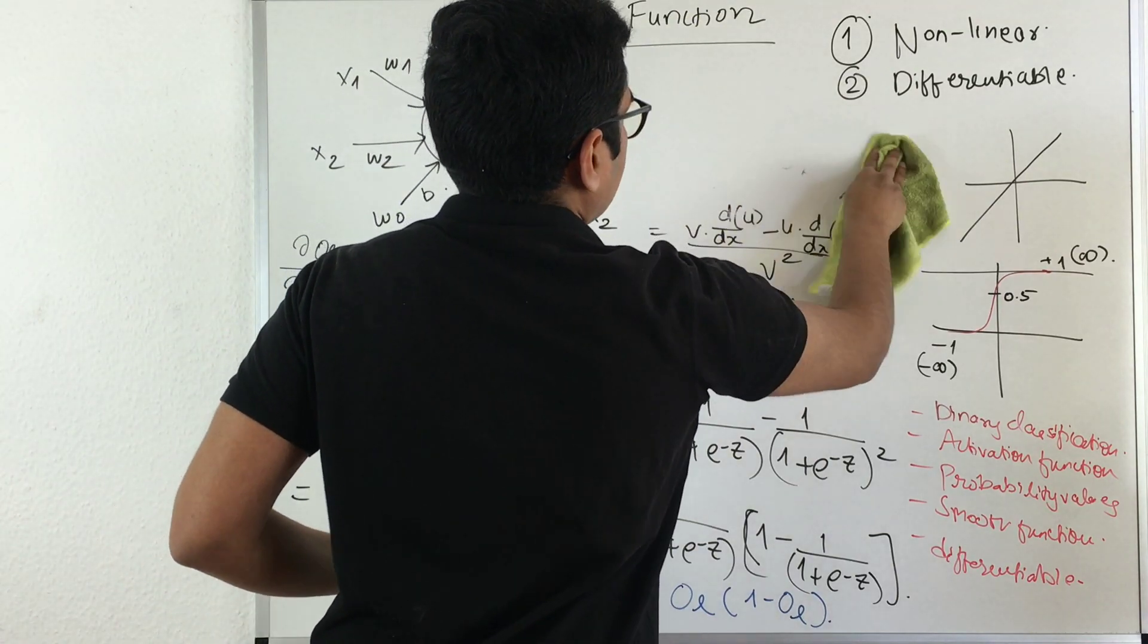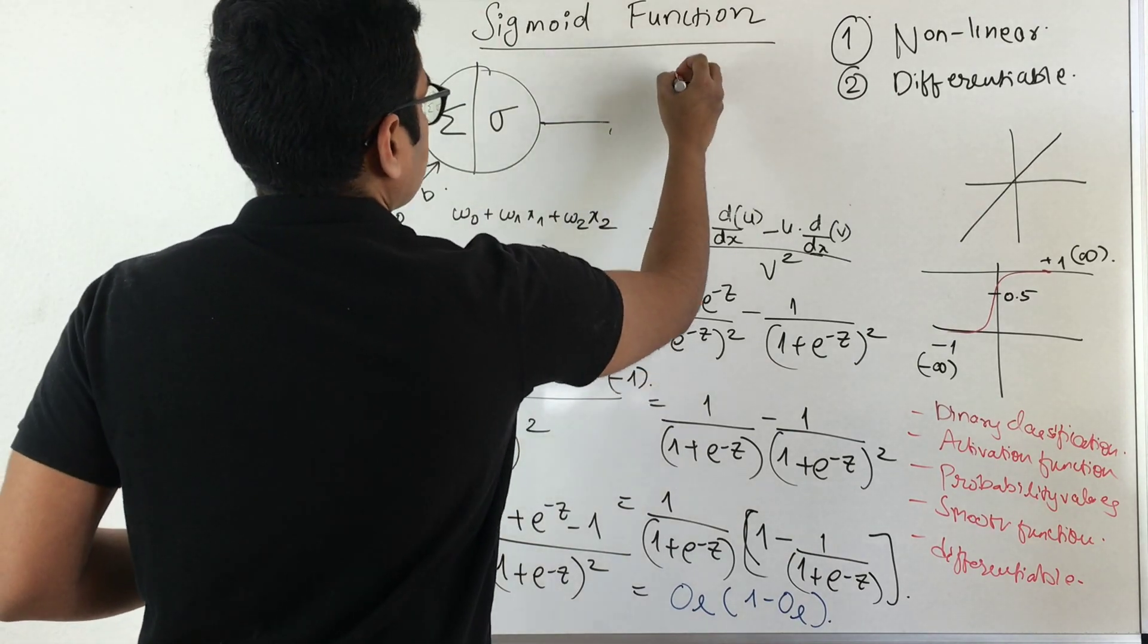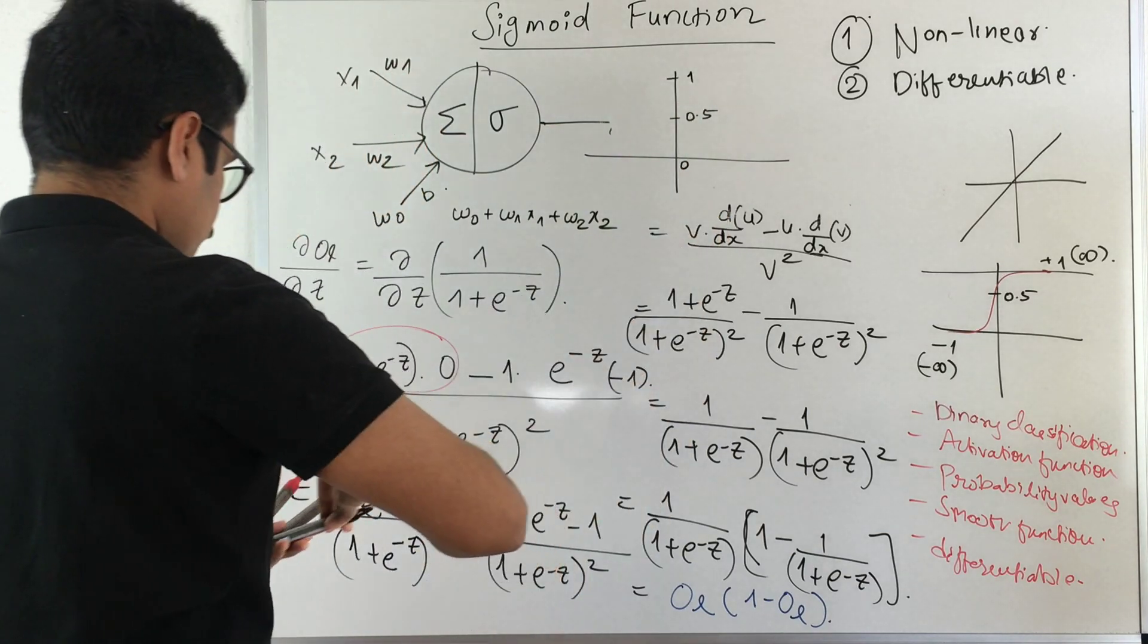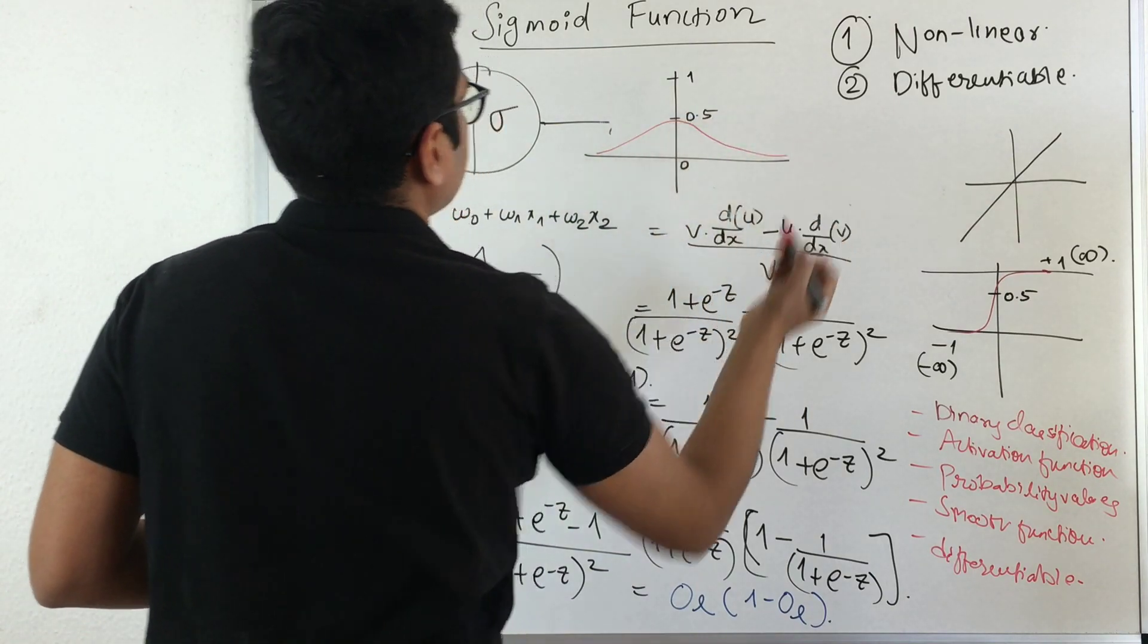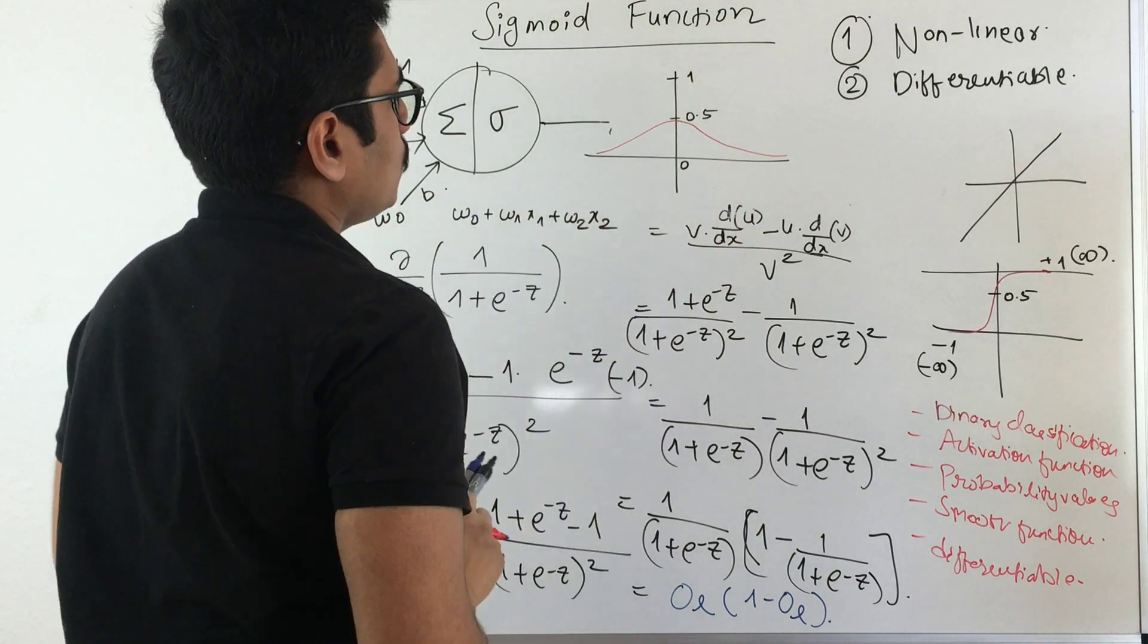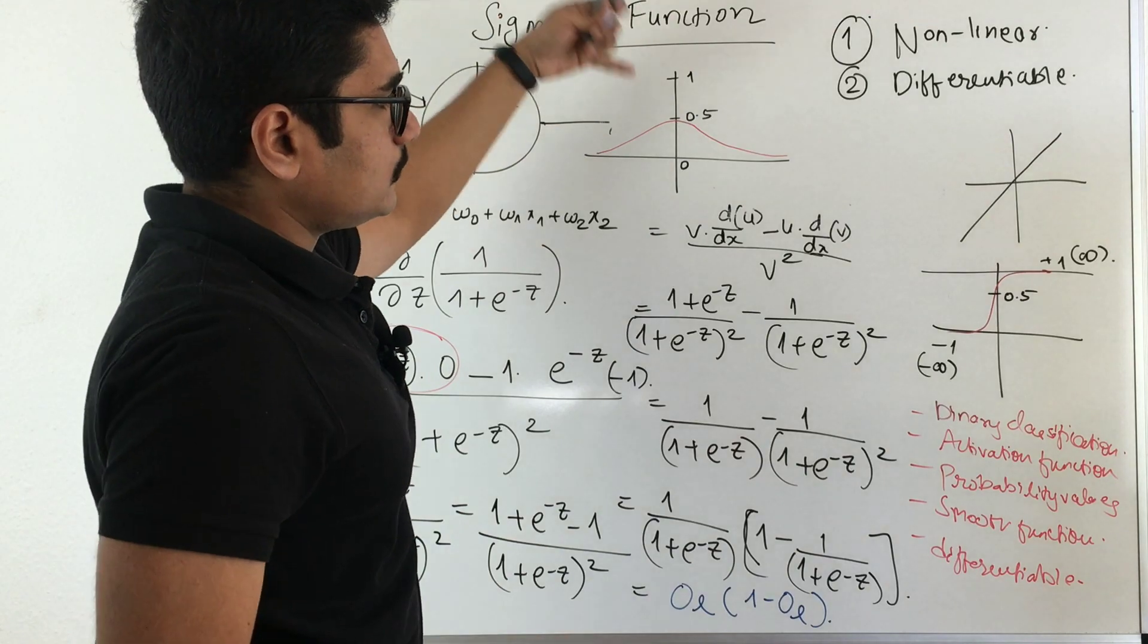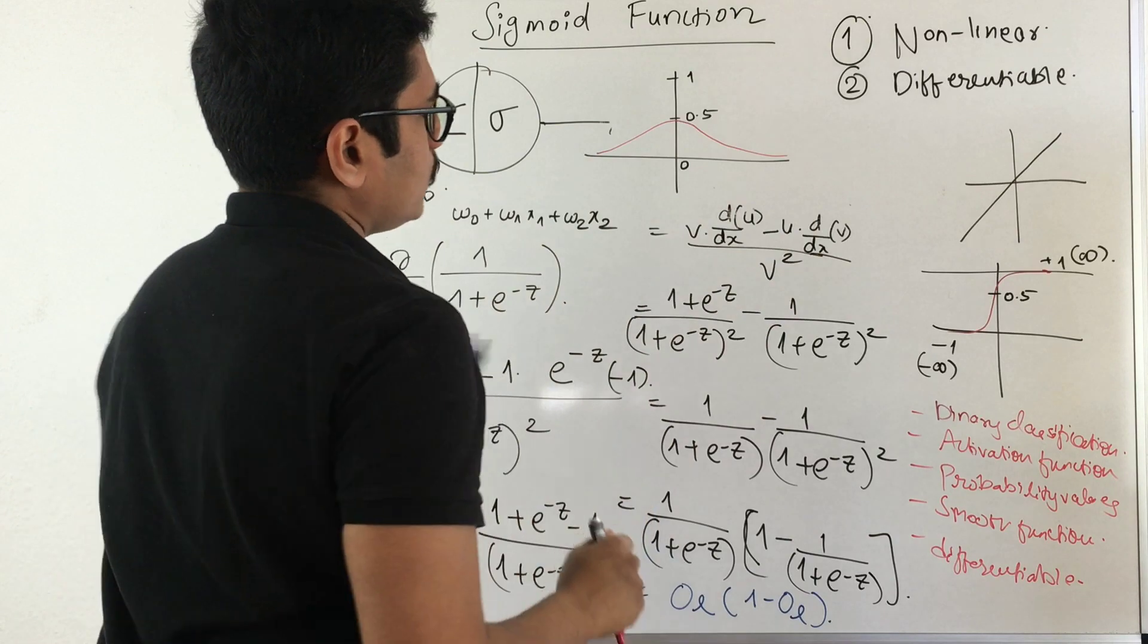Mathematically, how it looks is: you have 0 here, you have 1 here, and say you have 0.5. This particular graph looks something like this. Since this is also a nonlinear function, you can see the graph is also nonlinear and differentiable. That's why we have this particular graph, which is the differentiated geometrical representation of our sigmoid function.